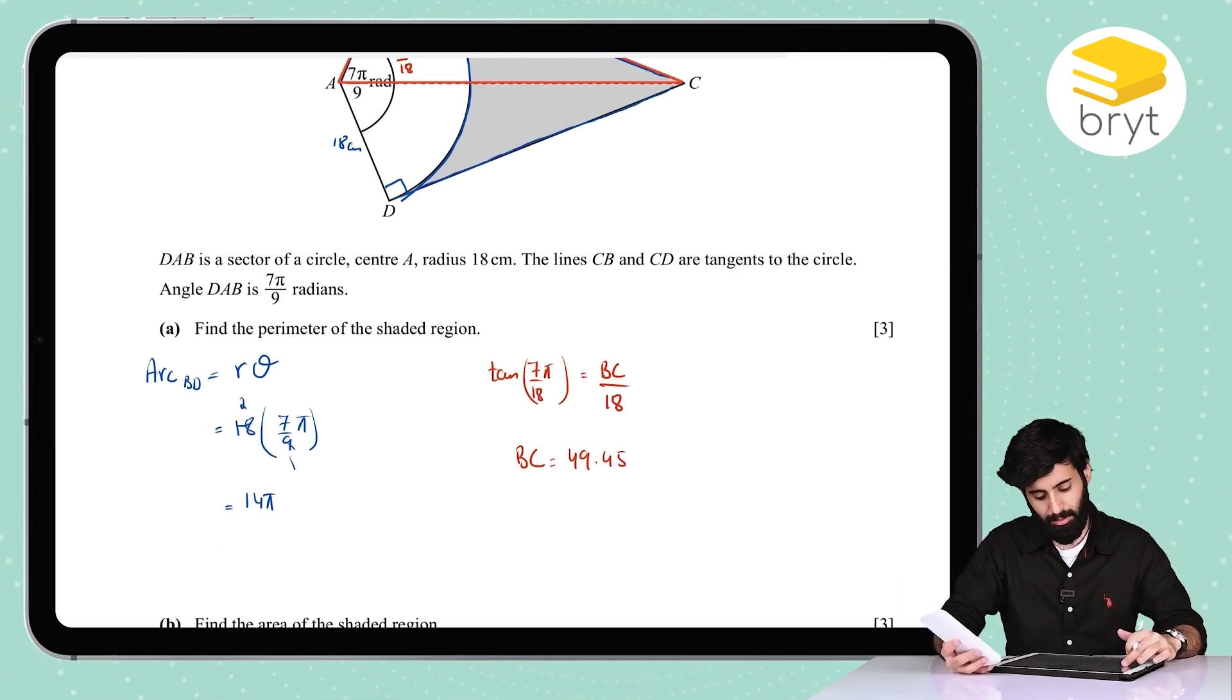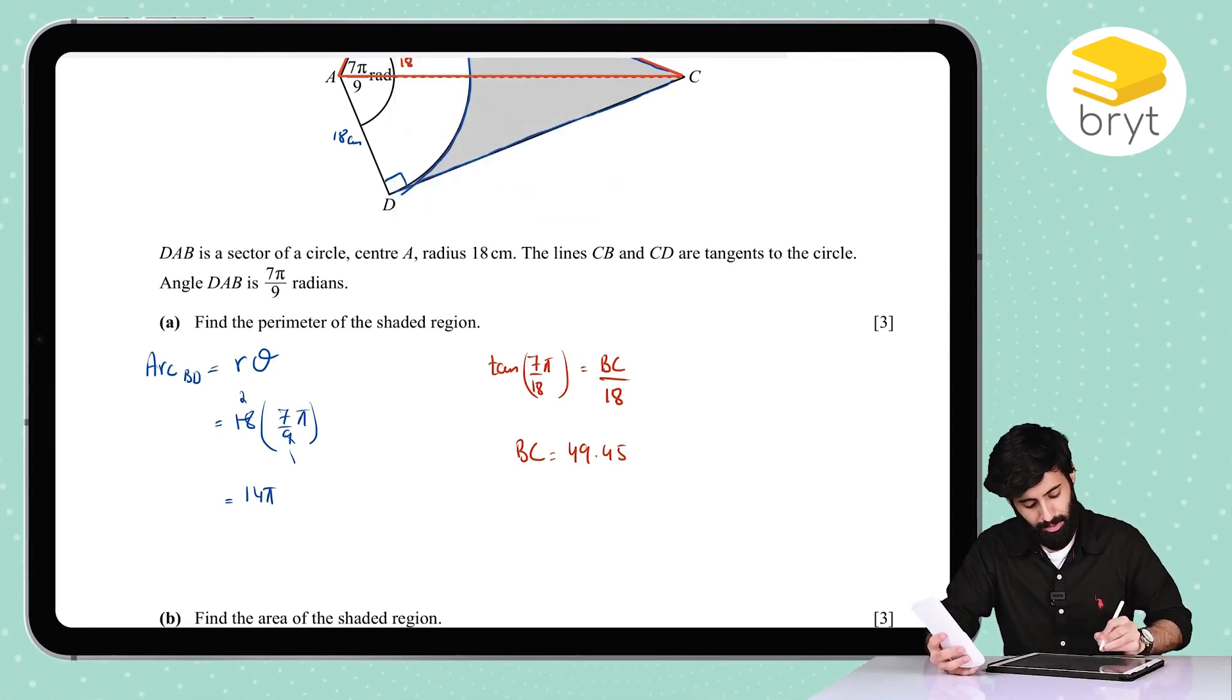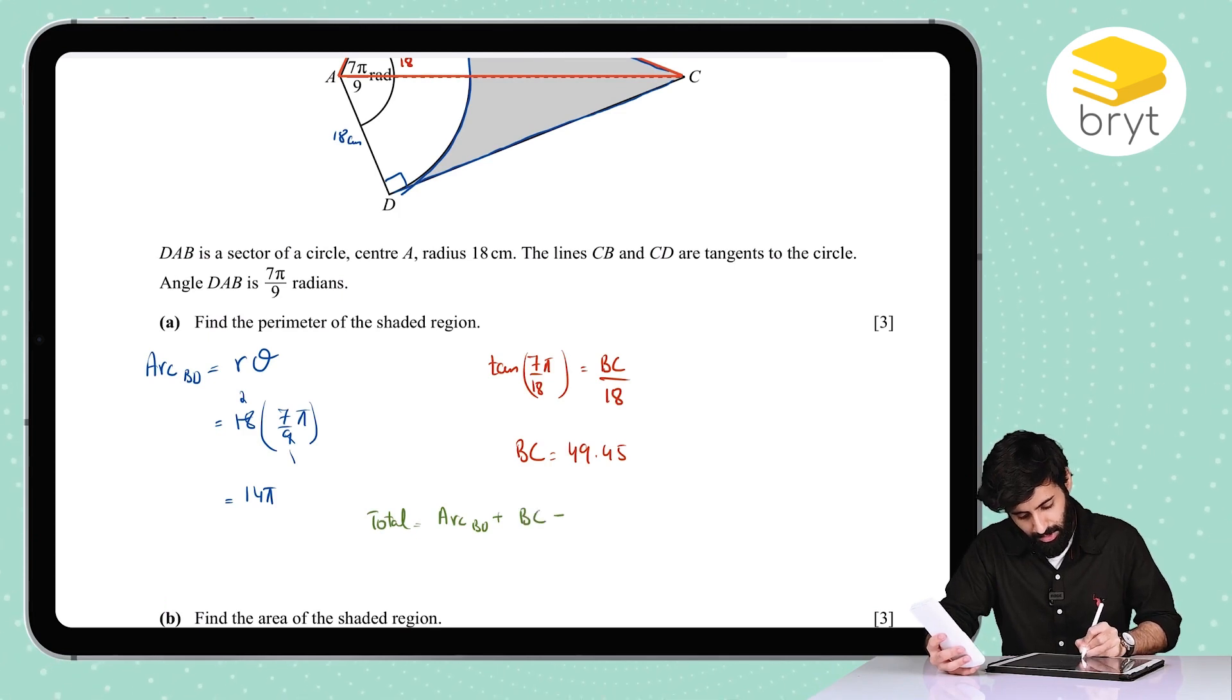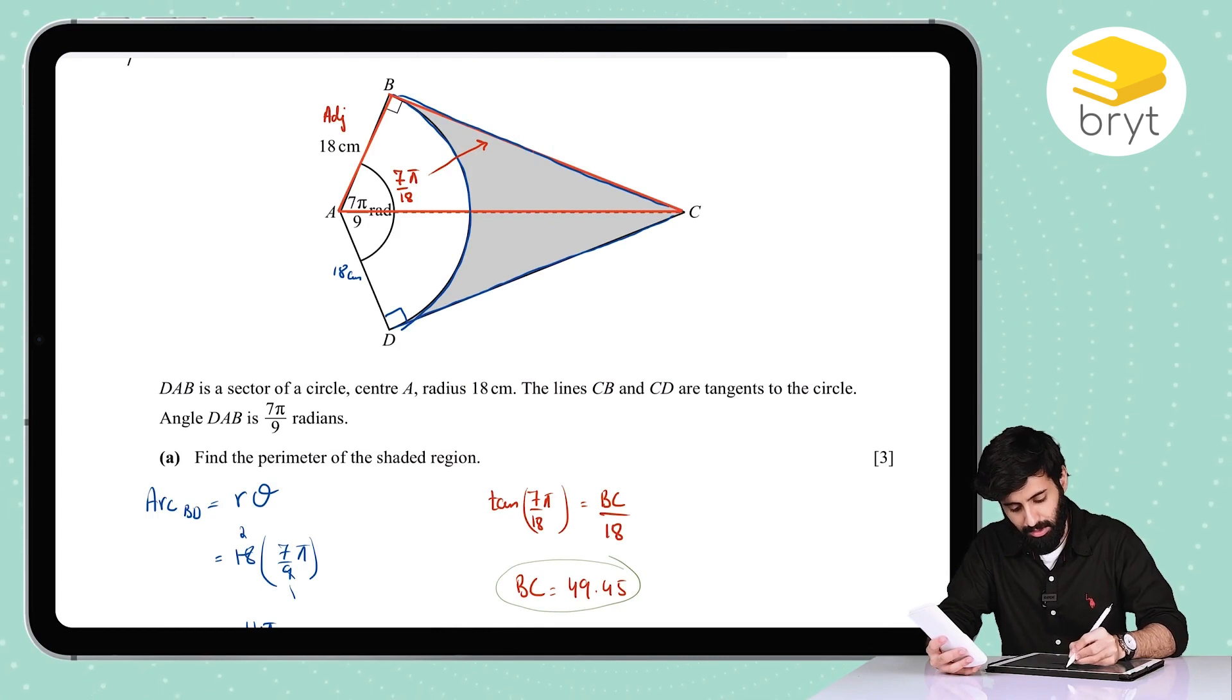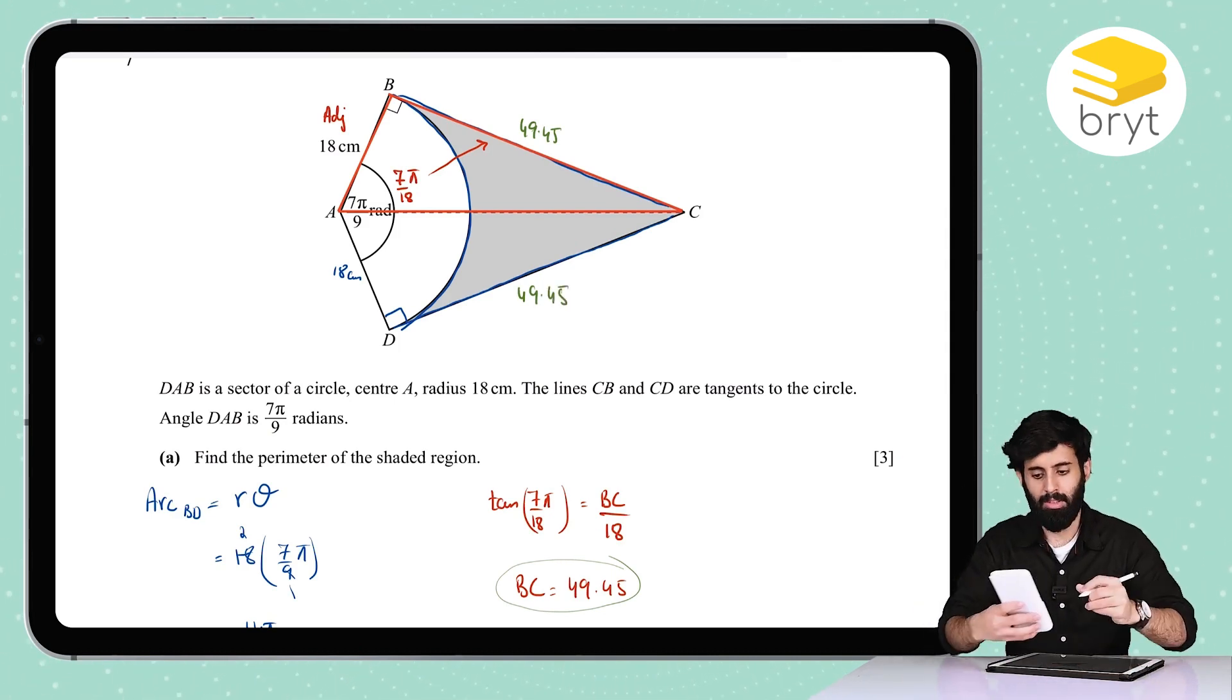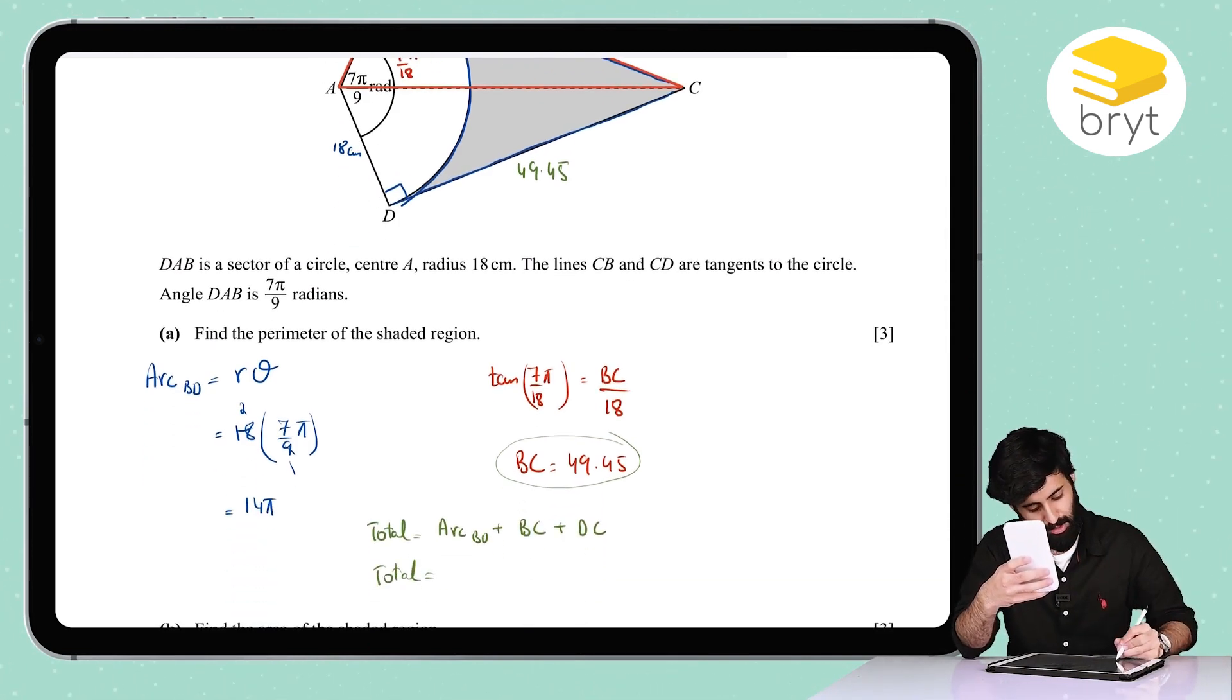Now we can just put it all together, we can find out the sum of the three lengths. So the total is basically going to be equal to the arc length from B to D plus the length from B to C, the straight line length, and then the length from D to C. So 49.45, if this is 49.45, that means this is also going to be 49.45. So I'll just multiply this length by two, now I have the sum of both of them.